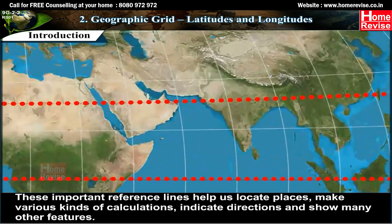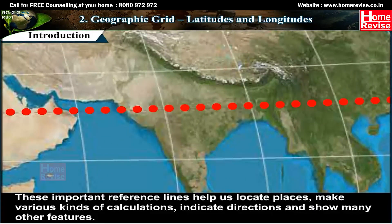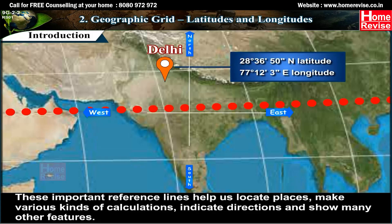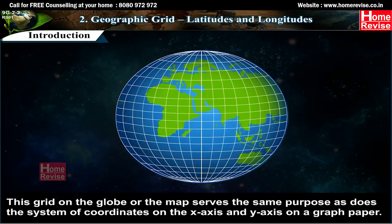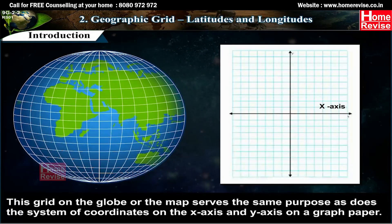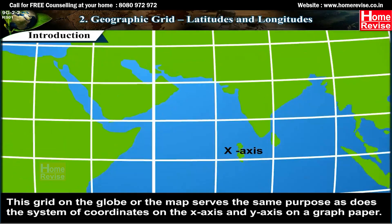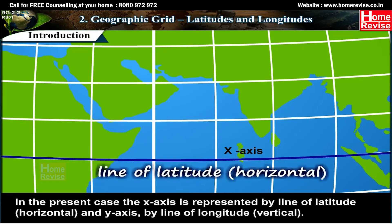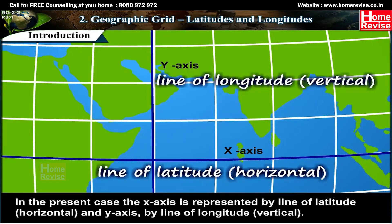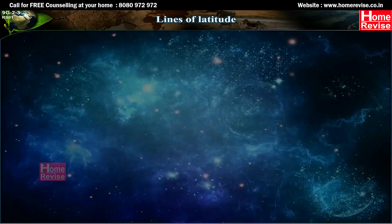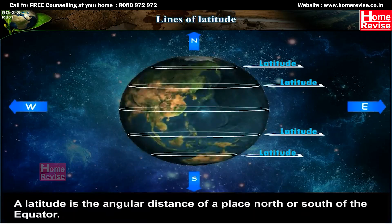The intersection of latitudes and longitudes pinpoints any place on the earth's surface, forming a framework known as the geographic grid. These important reference lines help us locate places, make various calculations, indicate directions, and show many other features. This grid on the globe or map serves the same purpose as the coordinate system on the x-axis and y-axis on graph paper. The x-axis is represented by lines of latitude (horizontal) and the y-axis by lines of longitude (vertical).